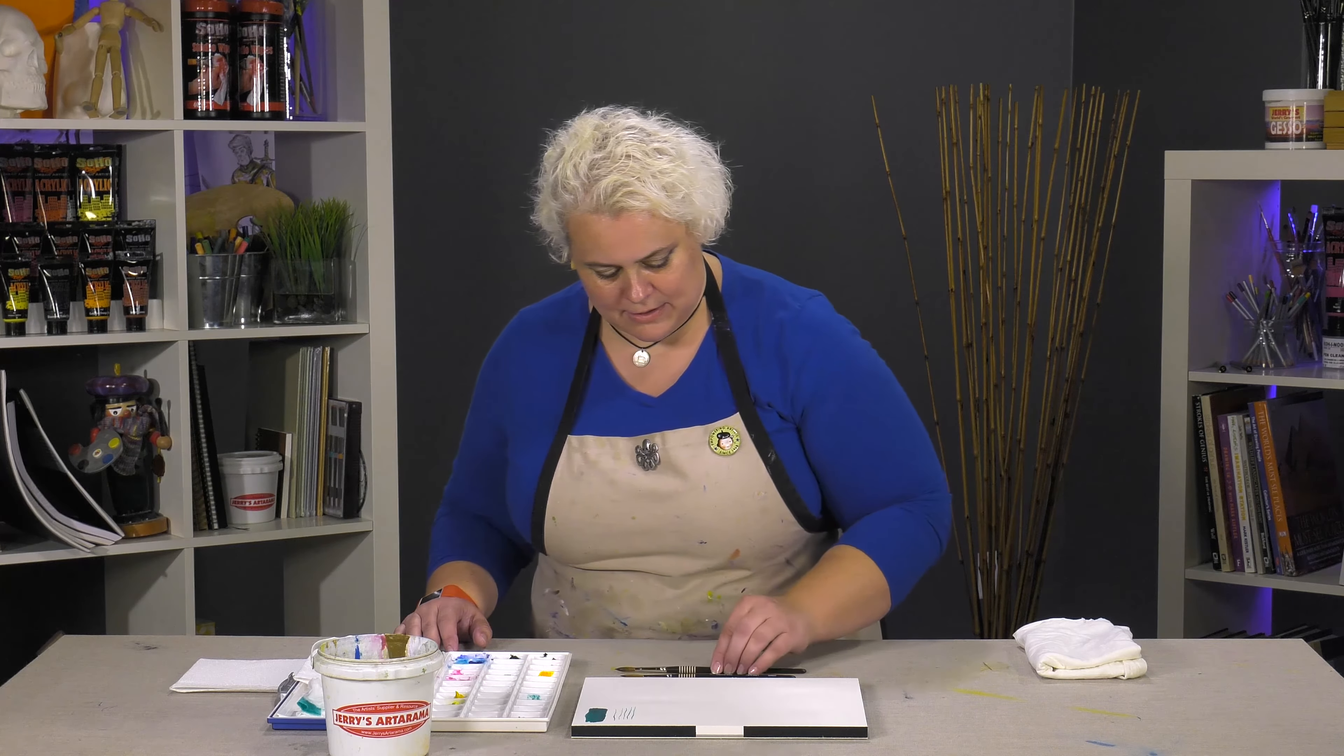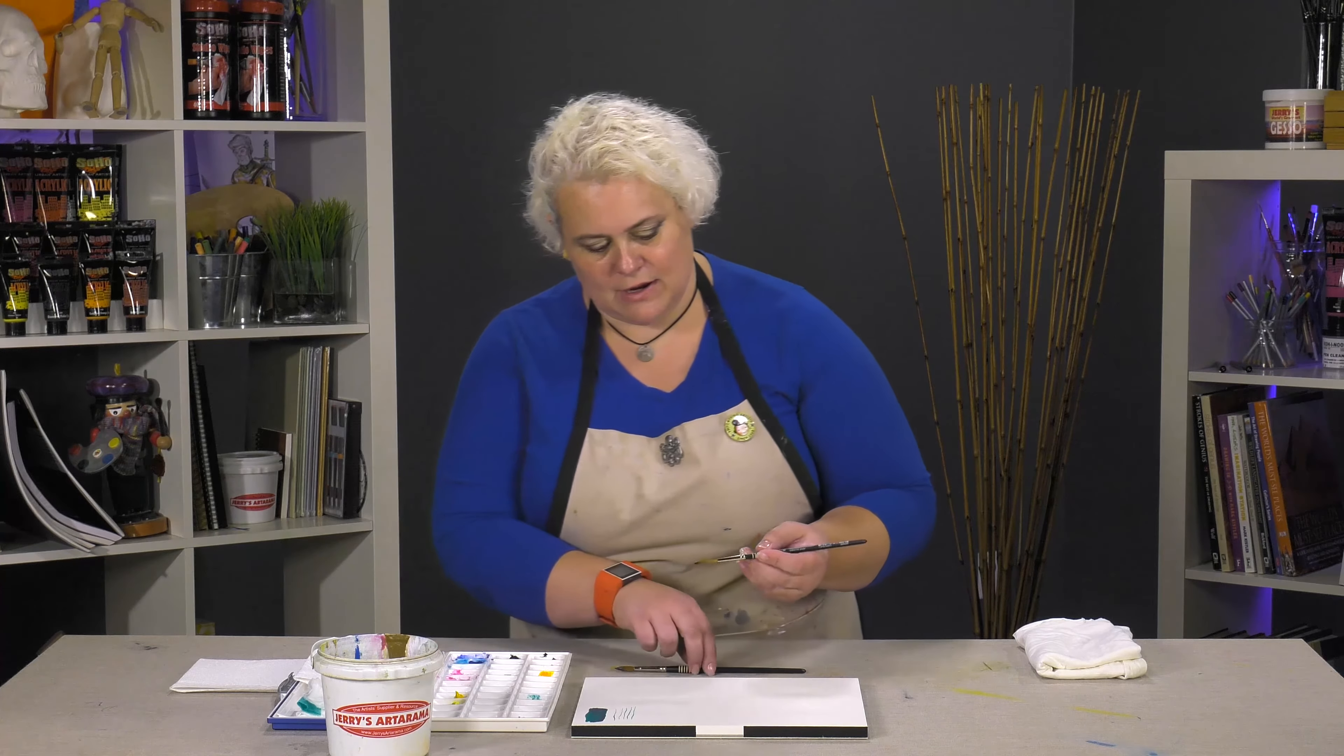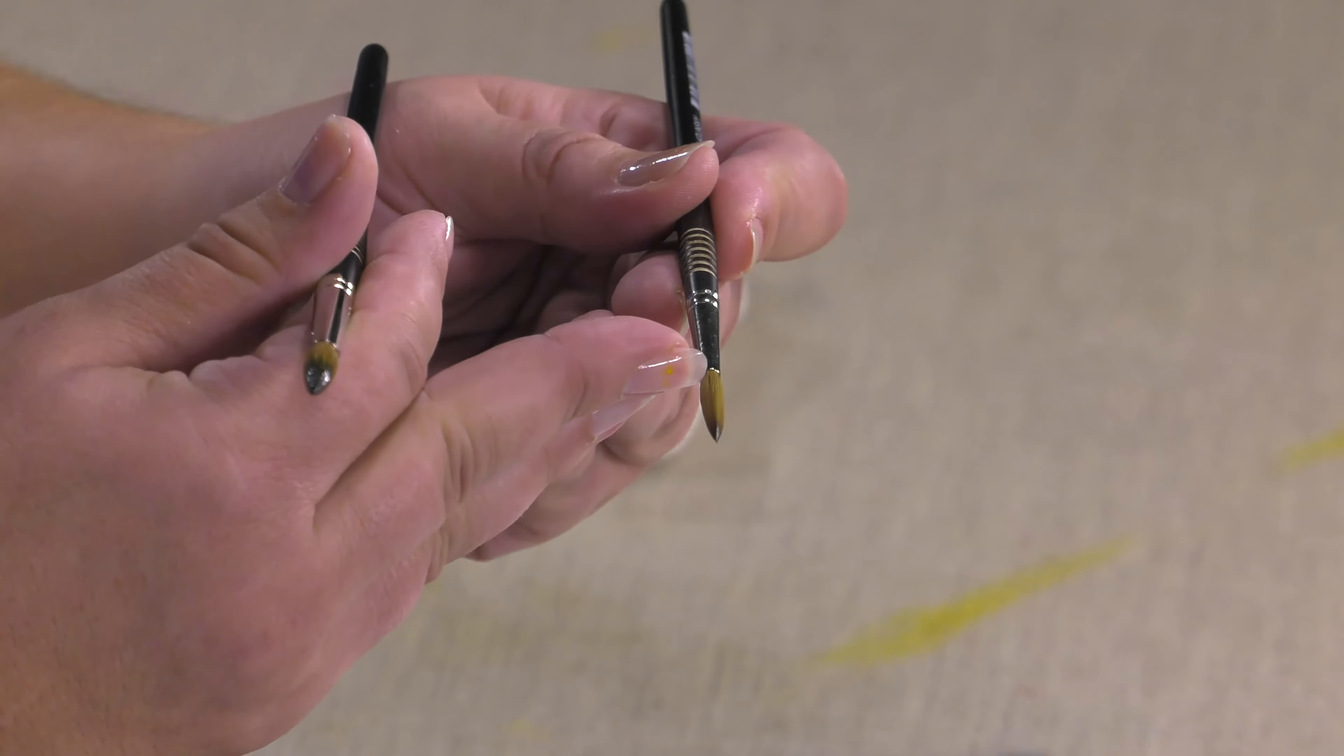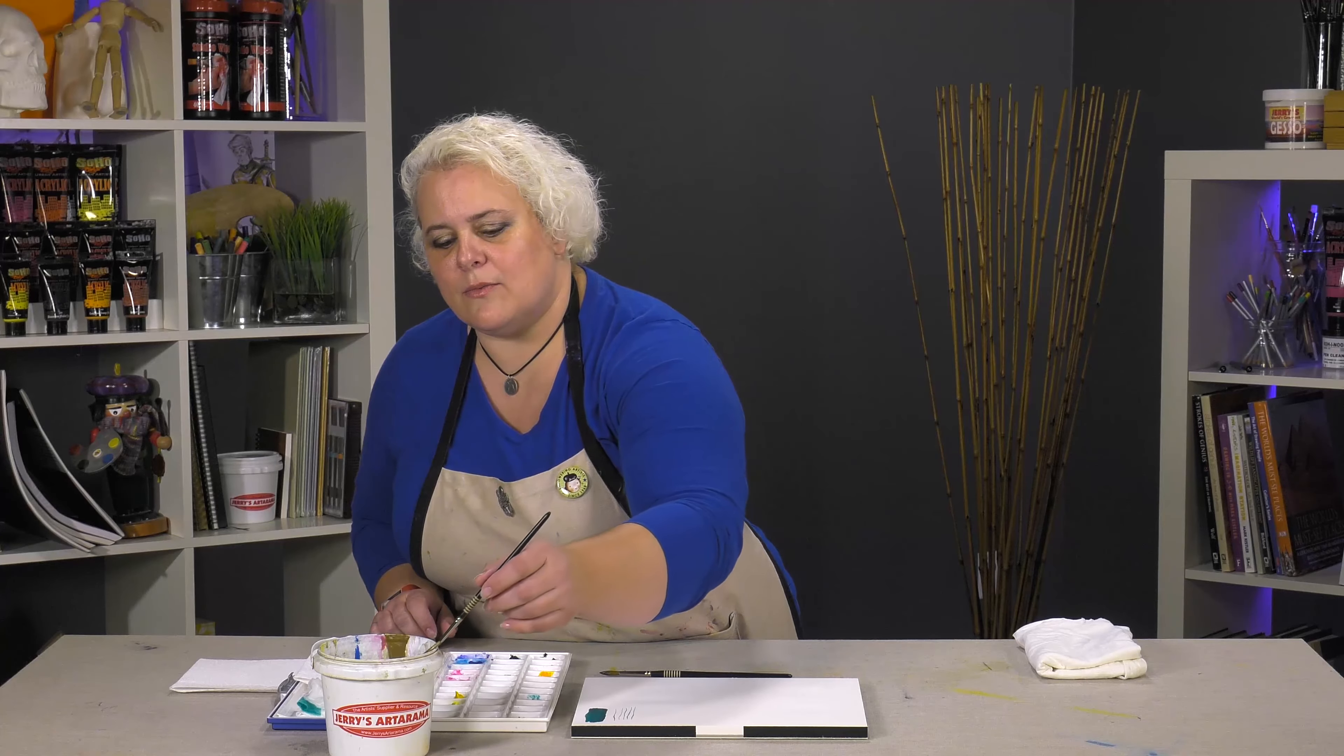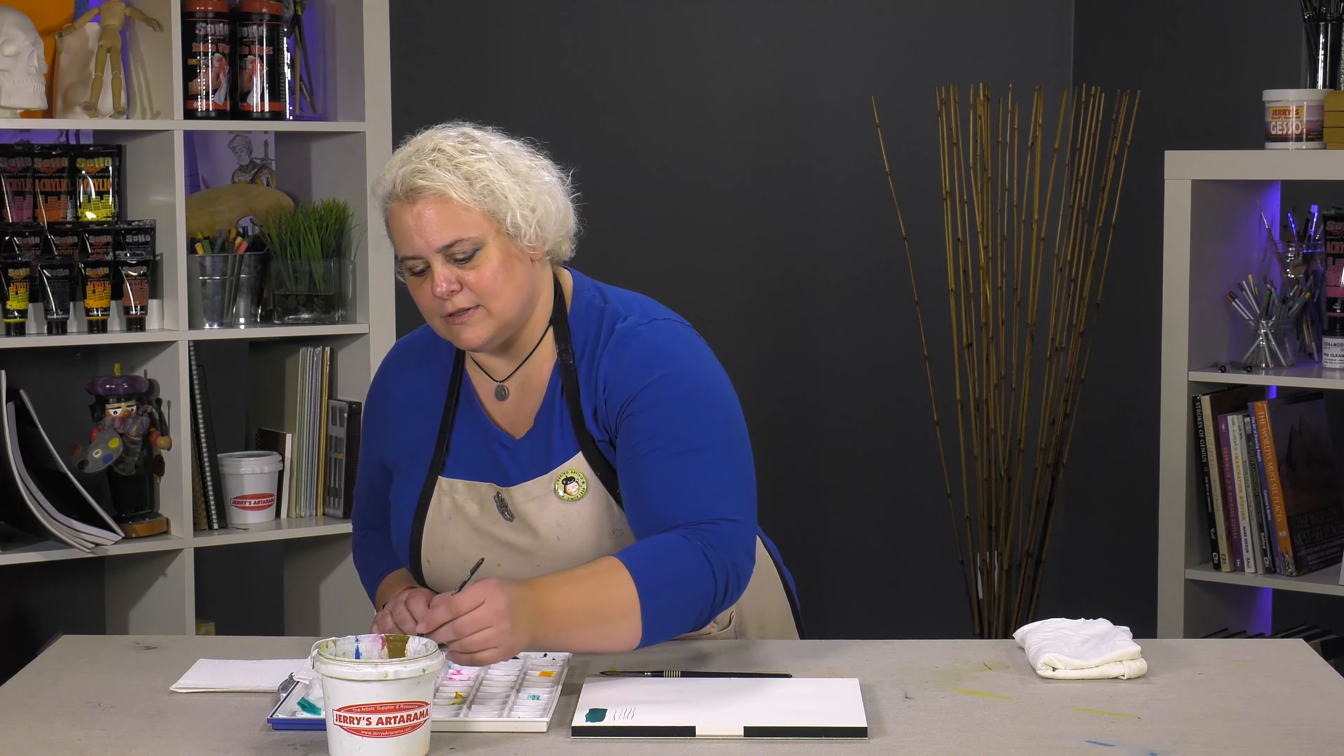Performant Kalinsky's also come in a script. The difference between a script and a round is this nice long hair. The belly of the brush is not as thick, so you're not expecting to drop as much water. You're not going to be using this for washes, but scripts are great for marine artists.